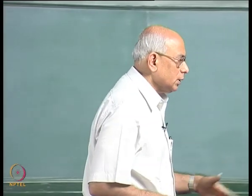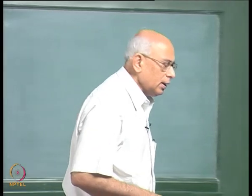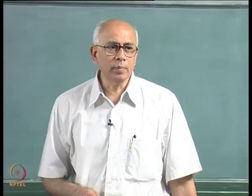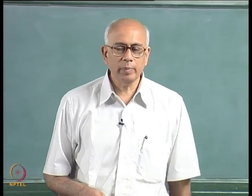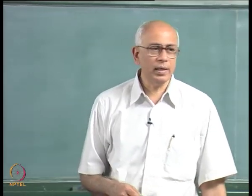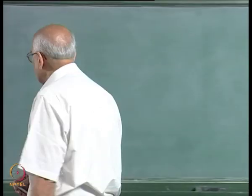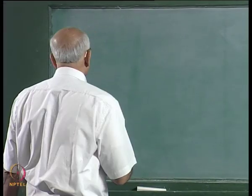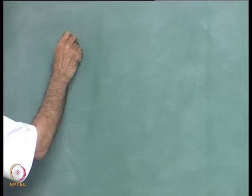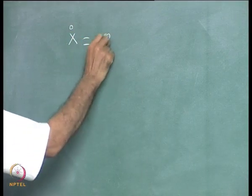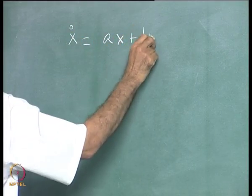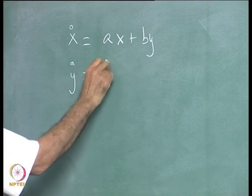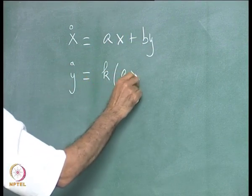One of the questions that arose in our studies was what happens if you have a degenerate system, namely one in which the linearized matrix has a zero eigenvalue. There are several kinds of degenerate systems, but let us look at a specific example — the simplest of these. Consider x-dot equal to ax plus by, and y-dot equal to some constant times the same thing, ax plus by.